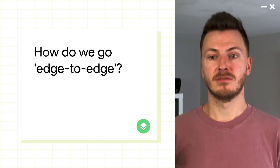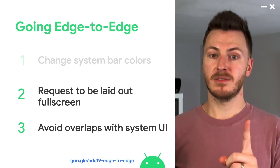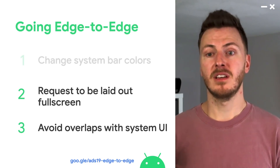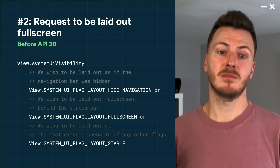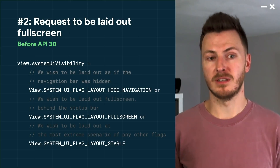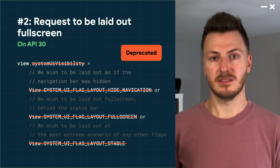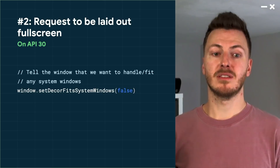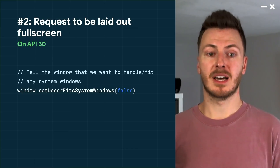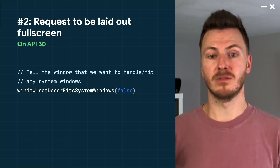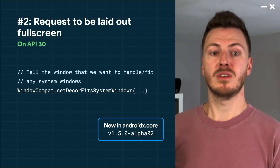So how do apps go edge to edge? Flashing back to a section of our ADS talk from last year, going edge to edge is made up of three tasks. We'll skip the first task because nothing has changed, but the guidance for tasks two and three have been updated with new changes in Android 11. For the second step, apps needed to use the system UI visibility API with a bunch of flags to request full-screen layout. If you're using this API and have updated your compile SDK version to 30, you'll have seen that all of these APIs are now deprecated. They've been replaced with a single function on Window called setDecorFitsSystemWindows. Instead of the many flags, you now pass in a boolean — false if apps want to handle system window fits themselves, or true if apps want the decor to handle it instead, which is the default. We also have a Jetpack version available in WindowCompat, recently released in AndroidX Core.